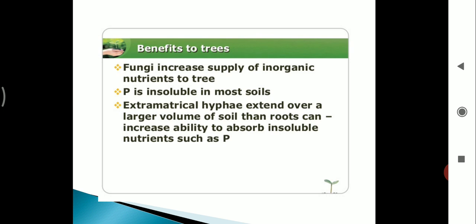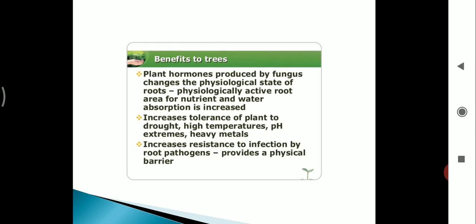Extramatrical hyphae extend over a larger volume of soil than roots can, increasing ability to absorb insoluble nutrients such as phosphate. Plant hormones produced by fungus change the physiological state of roots. Physiologically active root area for nutrients and water absorption is increased. This increases tolerance of plant to drought, high temperature, pH extremes, heavy metals, etc., and increases resistance to infections by root pathogens, providing a physical barrier.